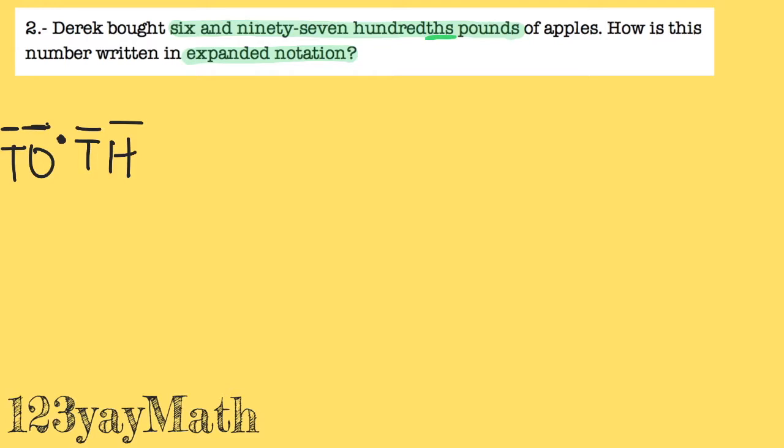Now let's place this number. Six and, this is your decimal point, ninety-seven hundredths. So hundredths. Your last number needs to end on the H. So six and ninety-seven hundredths.